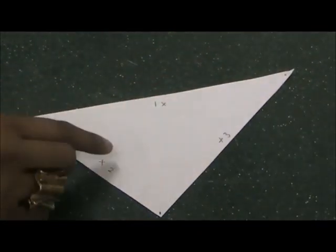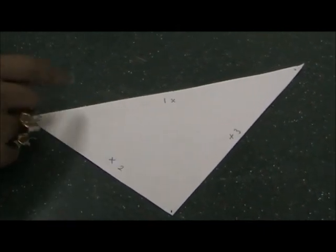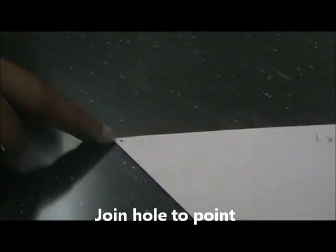Once you have your lamina with all your plotted points, you may start to draw. You will join hole number 1 to point number 1, hole number 2 to point number 2, and hole number 3 to point number 3.